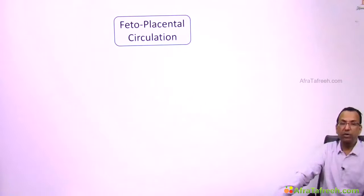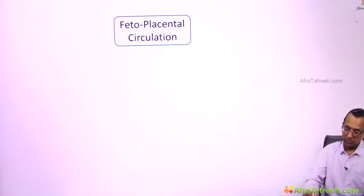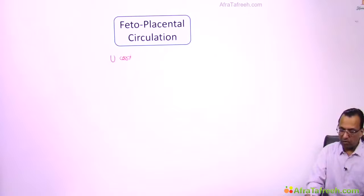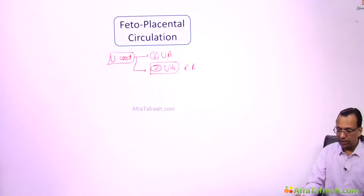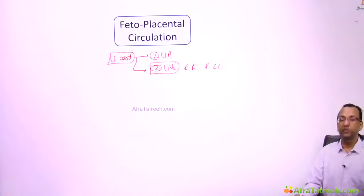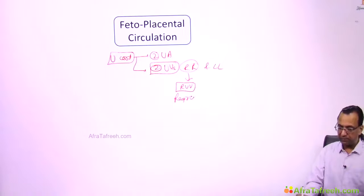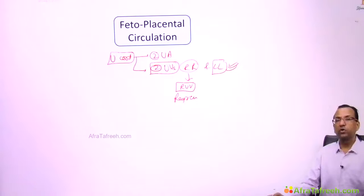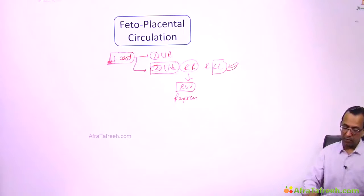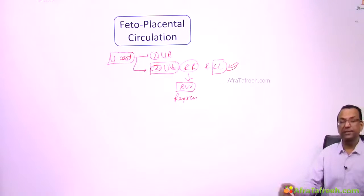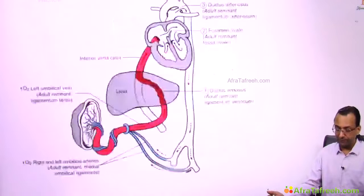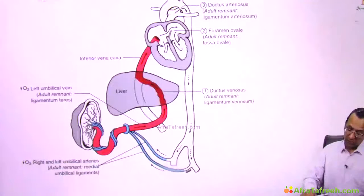This topic is about fetal placental circulation. Inside the umbilical cord, in the beginning you have two umbilical arteries and two umbilical veins, but later the right umbilical vein regresses and the left umbilical vein remains. So in the beginning the umbilical cord has two umbilical arteries and two umbilical veins, but later things change.